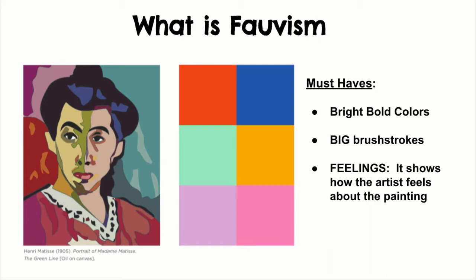At this time, it was very controversial — you don't do this — but it was actually something that was fun and it led to the movement of abstraction. For a Fauvist art piece, you would have to use really bright colors and big brushstrokes. The idea was that looking at the feelings, you could actually see how the artist felt about the painting versus what the painting was about.